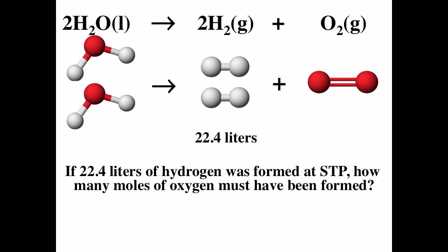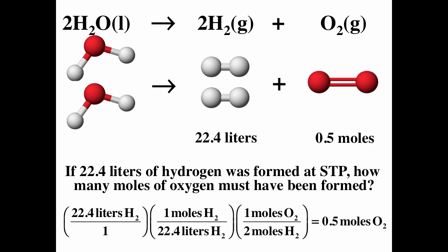If 22.4 liters of hydrogen were formed at STP, how many moles of oxygen must have been formed? STP is standard temperature and pressure — zero degrees Celsius and one atmosphere. We start with 22.4 liters of H2. We know that one mole of an ideal gas at STP corresponds to 22.4 liters, so we put the liters on the bottom to cancel. From the reaction, for every two moles of H2 formed, we get one mole of O2. So 22.4 divided by 22.4 divided by 2 gives us 0.5 moles of O2. We can always go between volume and moles, and then use the reaction to go from moles of one thing to moles of another.